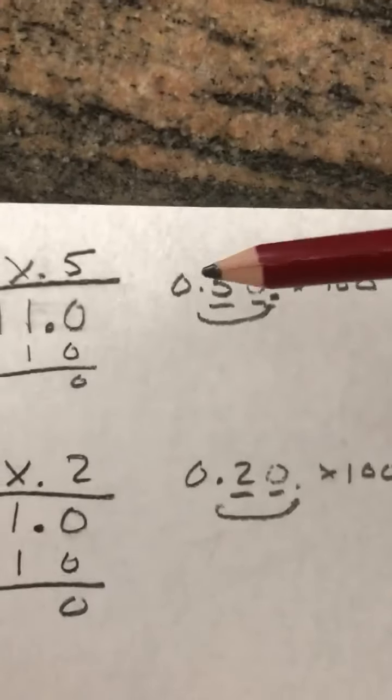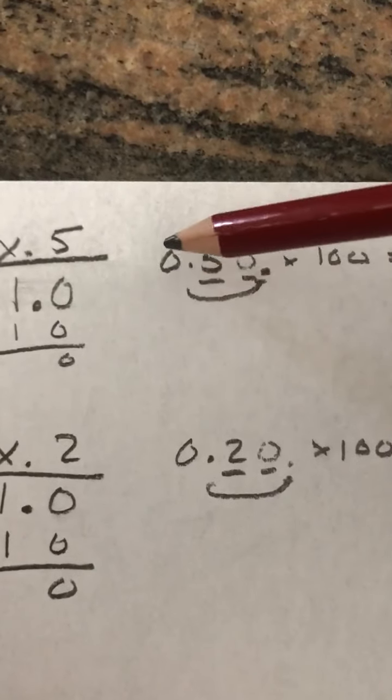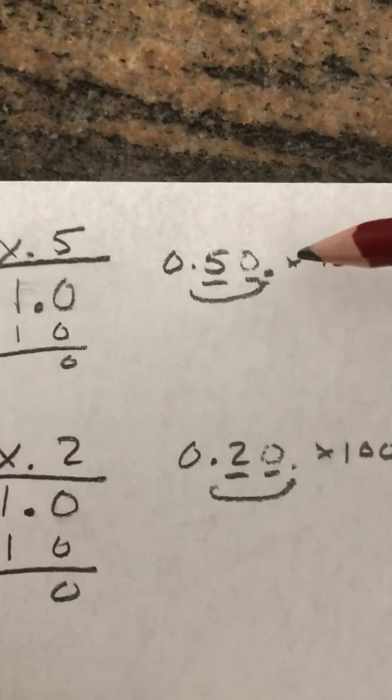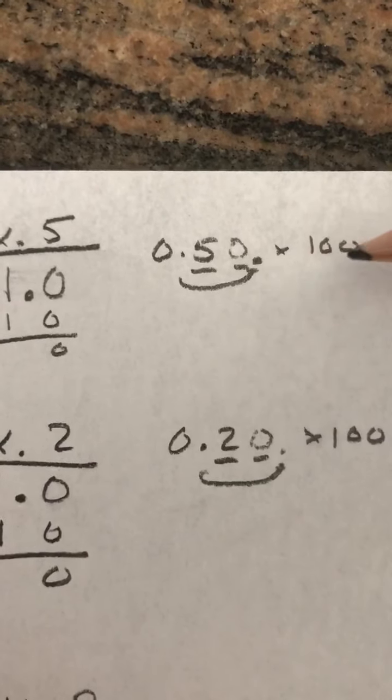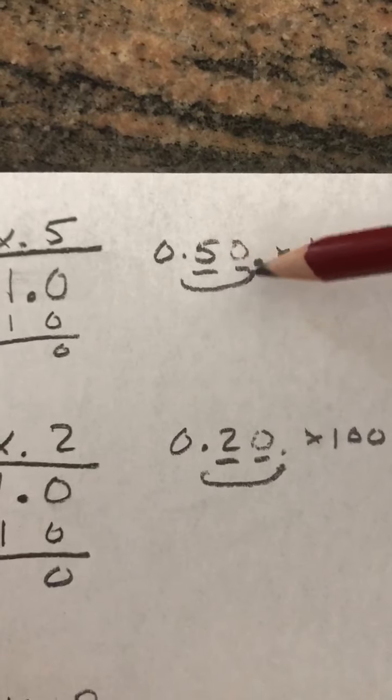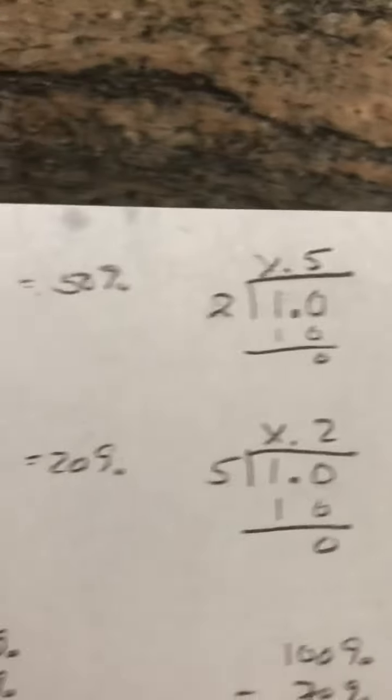Now, when I multiply it by 100, I actually make it 0.50. Again, I annex another zero. And why? Because I need to move the decimal over two spaces when I multiply by 100. So I move it over one, two spaces. So it's going to become 50%.